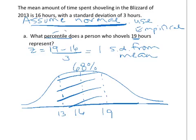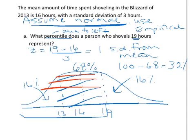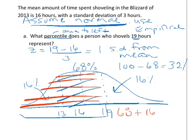Percentile, remember, is area to the left — always. So the percentile is all of this whole piece, not just the middle, but 68% is going to get us started. If I take the whole curve, which is 100%, and take off 68%, I'm left with 32% for the two pieces on the sides that are not shaded. That means each tail is 16%. So my percentile is all the shaded area from 19 all the way down to the left end. Adding 68% plus 16% gives me a percentile of 84. The person who shovels 19 hours represents the 84th percentile.